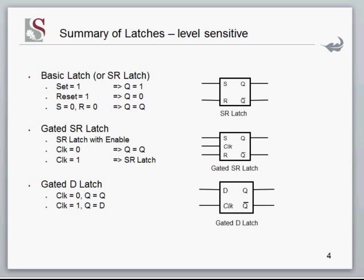The first one you need to know is the basic SR latch. It has two inputs: Set (S) and Reset (R). If Set is high, Q will be one; if Reset is high, Q will be low. Not-Q is the inverse of Q. The memory is added when S is low and Reset is low — if it's not being set and not being reset, Q maintains its previous value. If Set is one Q is one, if Reset is one Q is zero, but if they're both zero, this thing just remembers its value.